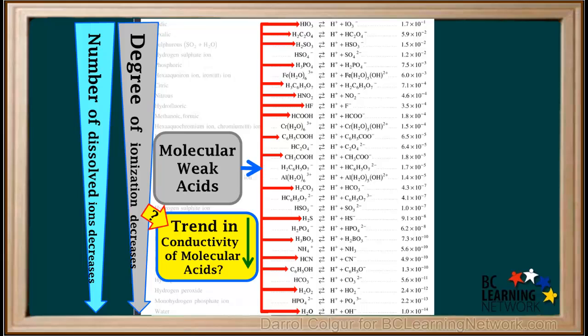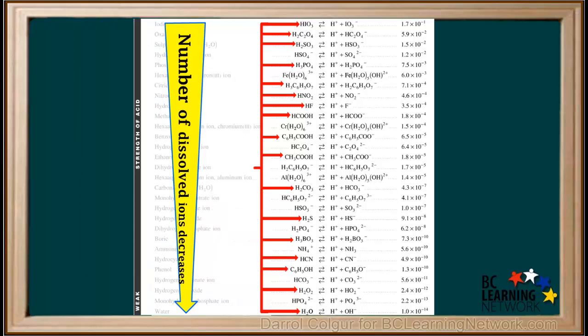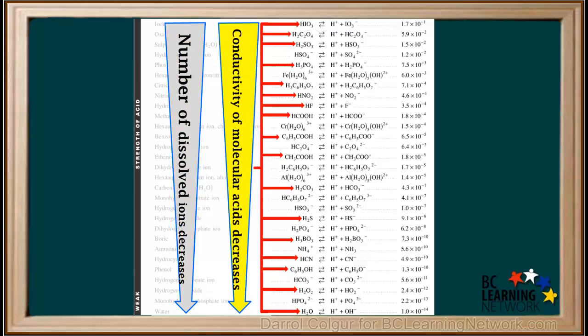So what do you think the trend in conductivity of molecular acids will be as we move down the column? Electrical conductivity depends on the number of dissolved ions in solution. So as we move down the column and the number of dissolved ions decreases, the conductivity of molecular acids also decreases.